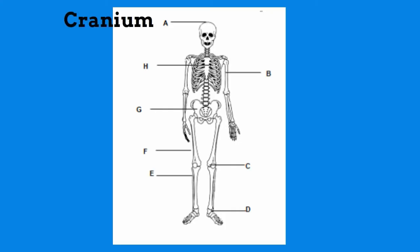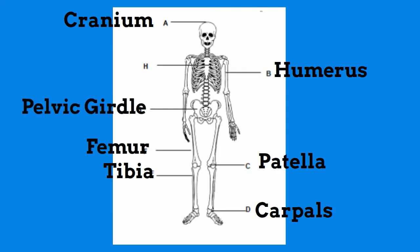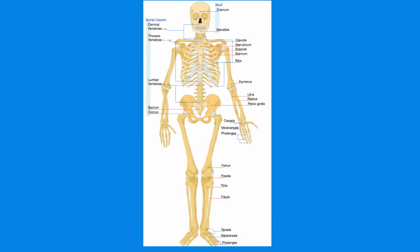Up first is the cranium, then we have the humerus, the patella is your knee, carpals, the tibia, the femur, the pelvic girdle, and the sternum, then we have your clavicle.